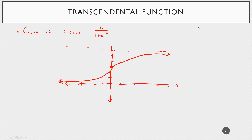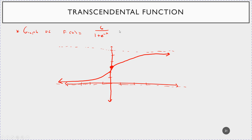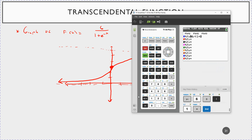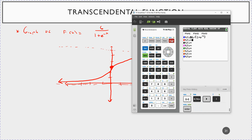Let's check with the graphing calculator: y = 6 / (1 + e^(-x)). You can see right at the y-intercept it changes — going concave upward and then concave downward. The slope of the tangent line starts falling. My freehand sketch matches the graphing calculator output.